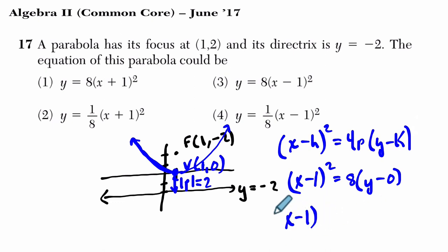So now we have x minus 1 squared. Let's isolate y by dividing both sides by 8, or times it by 1 eighth. And y minus 0 is just y. And I isolated y because that's the form they have it in here. So I'm going to choose choice 4. Alright, hope that helps.